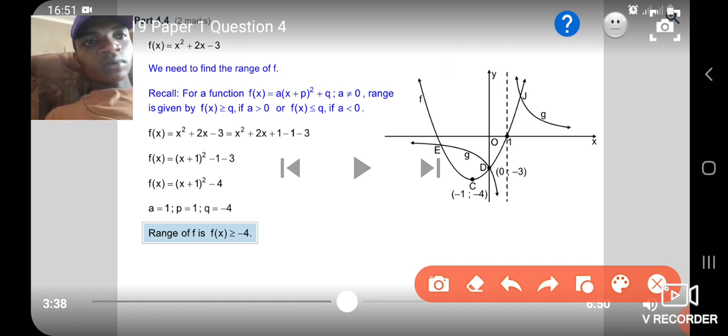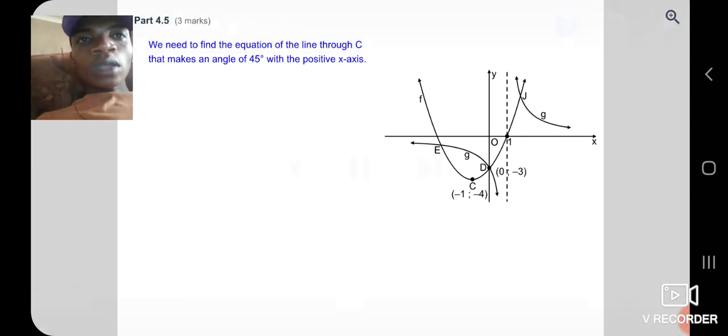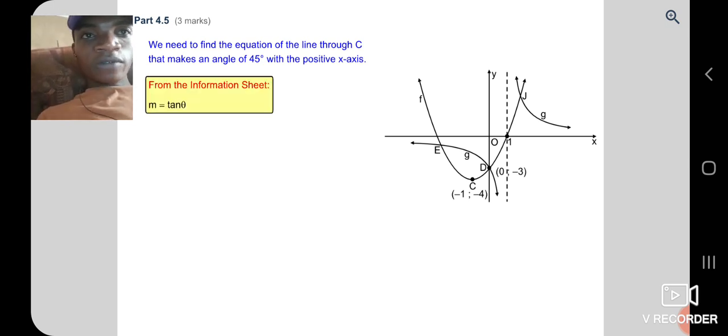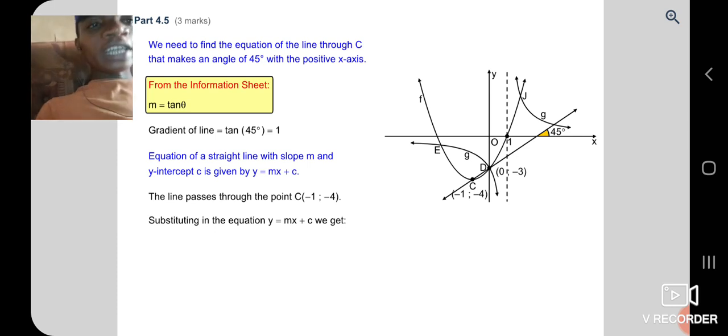Question 4.5. We need to find the equation of this straight line through C. It's a straight line with 45° angle. We know the gradient is equal to tan theta. We take that 45 and tan theta. tan 45° = 1. So the equation of straight line = y = mx + c. And we have a coordinate of C. We use coordinate that question chosen.